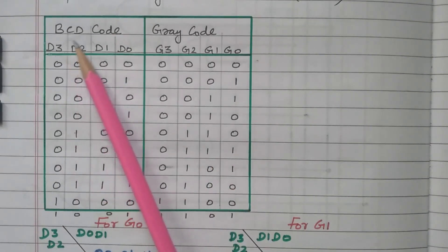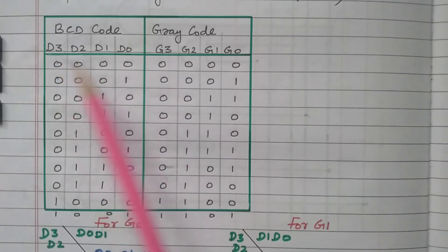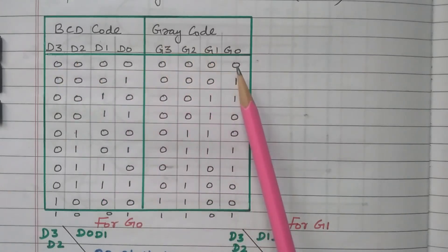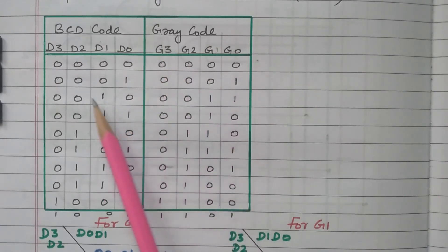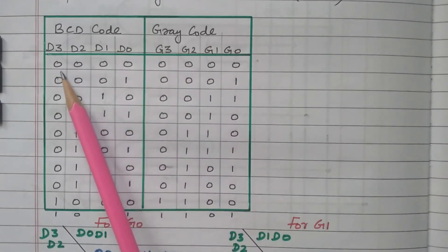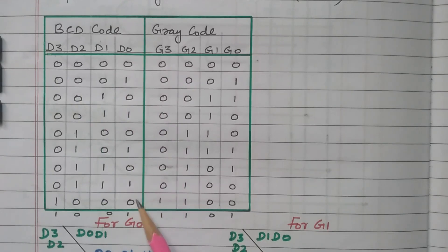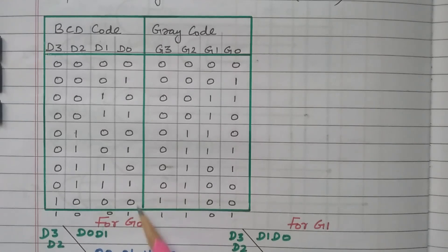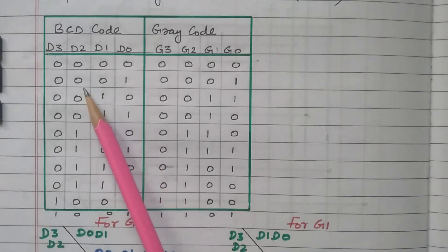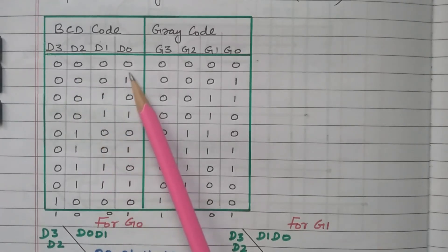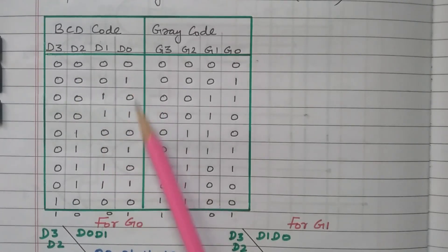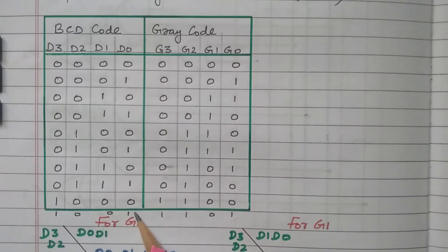The input is the BCD code D0, D1, D2, D3, and the output is the gray code G0, G1, G2, G3. We consider values from 0 to 9 — above 9 is not considered. The input is represented by 4 digits, covering decimal 0 through 9. Each BCD value is converted to gray code using the above logic.